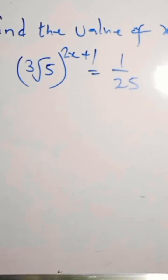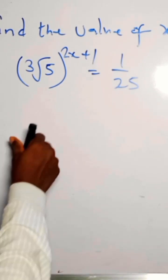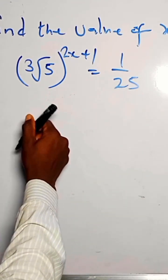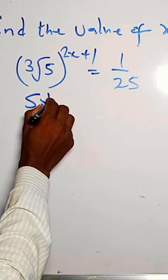The question says find the value of x in this equation. We have the cube root of 5 raised to the power 2x plus 1 equals 1 over 25. So how do we do this solution?